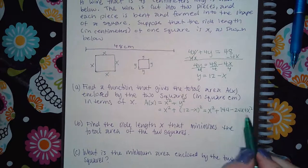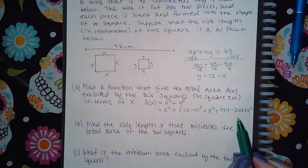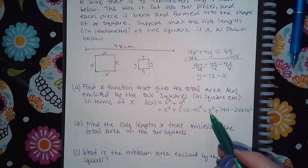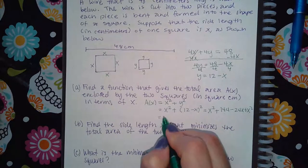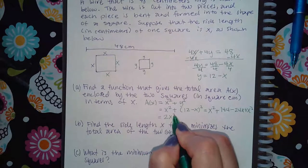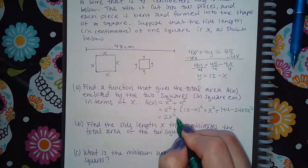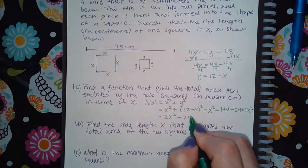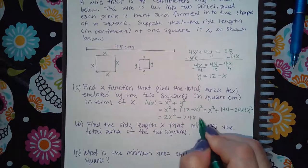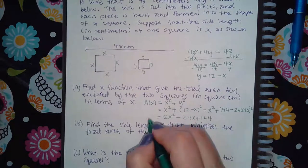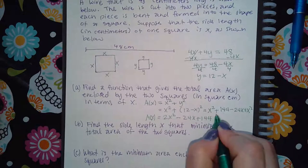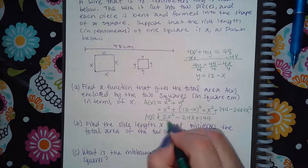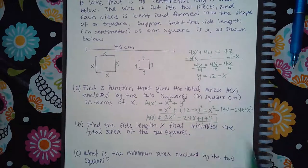Combining like terms: A(x) = 2x² − 24x + 144. This is the expression they want for the total area function A(x).